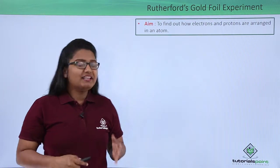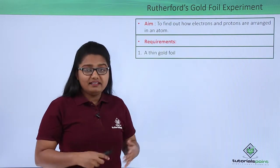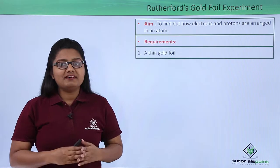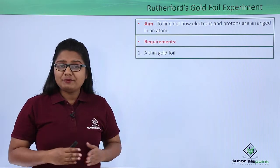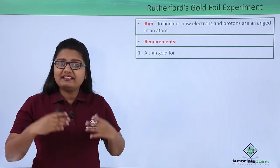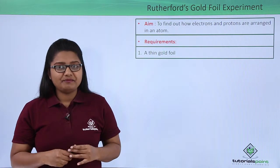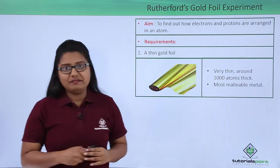For this experiment he took a few things. The first thing was a thin gold foil. He chose gold because it is a highly malleable metal which can be beaten into very thin sheets. The foil he chose was around a thousand atoms thick.